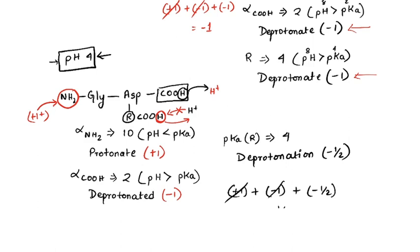That is how we can calculate the overall charge of a peptide at a certain pH — by going group by group, determining protonation or deprotonation based on the pH versus pKa comparison, assigning the corresponding charge, and summing them up to find the total charge of the molecule.